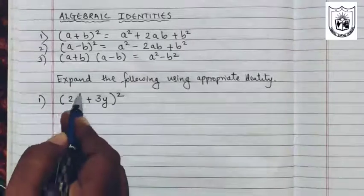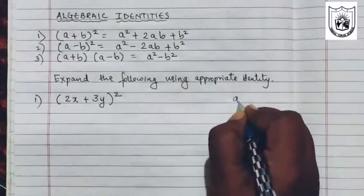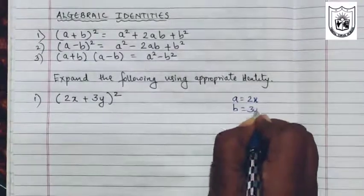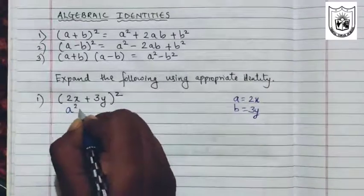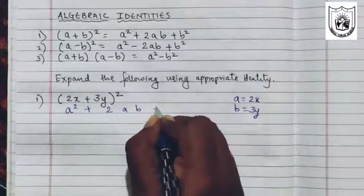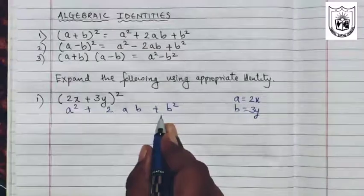Now if you see, this is in the form a plus b the whole square. So a here is 2x and b here is 3y. We will first write the formula, that is a square plus 2ab plus b square. This is optional. If you want, you can write otherwise it is not required.